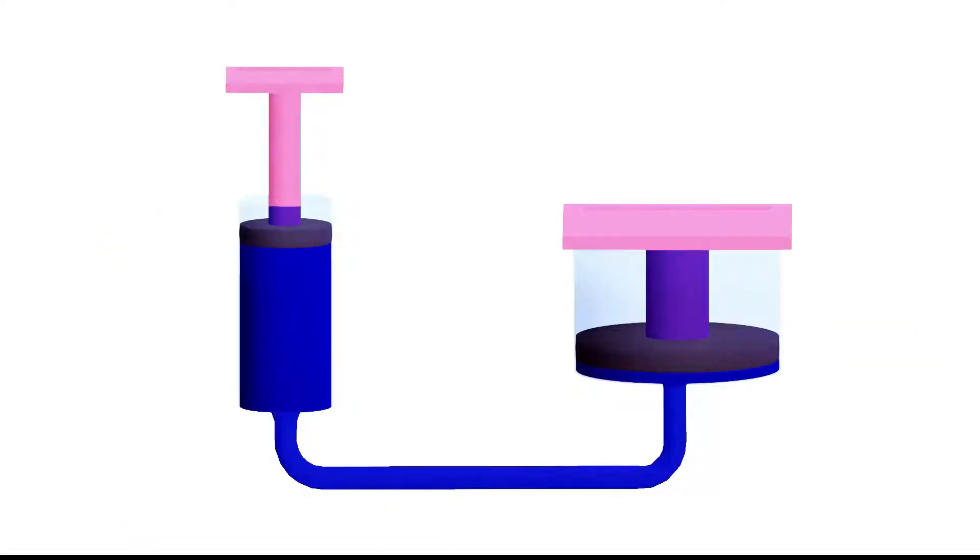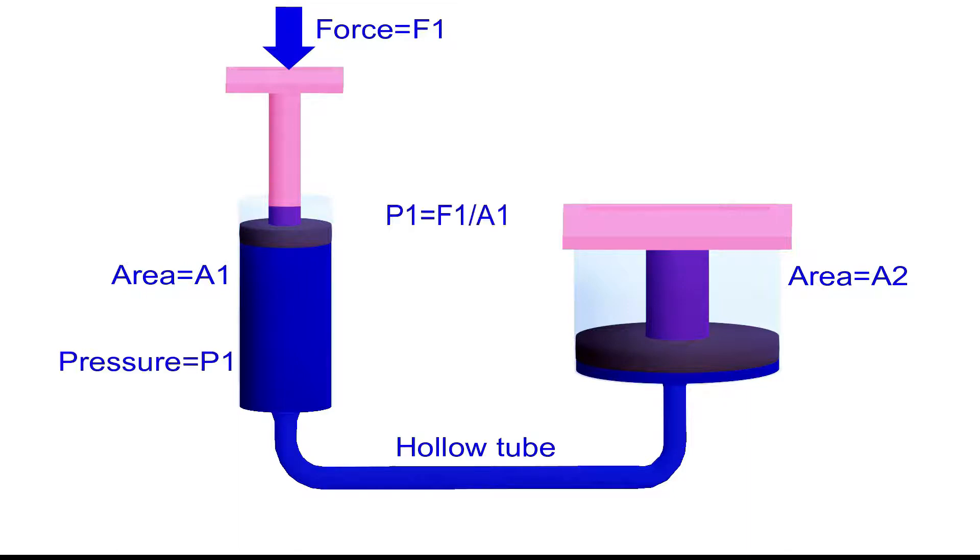Here is a simple setup to demonstrate the basic principle. A smaller cylinder with cross-sectional area of A1 is connected to a larger cylinder with cross-sectional area of A2 by using a hollow tube. When a force, F1, is applied on the smaller piston, the pressure of F1 by A1 is developed inside the smaller cylinder.